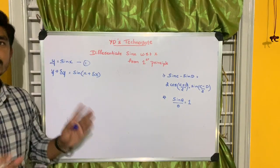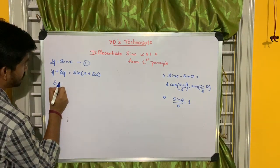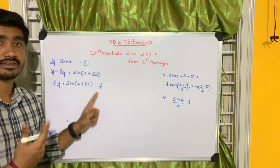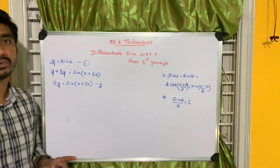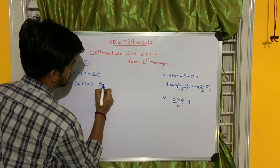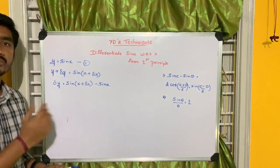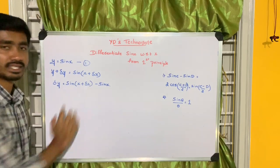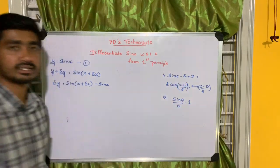After this, I'll just shift y from the left-hand side to the right-hand side. What is y? If you just go back, equation 1 says that y is equal to sine x. So delta y is equal to sine of (x plus delta x) minus sine x. This is exactly similar to sine c minus sine d.